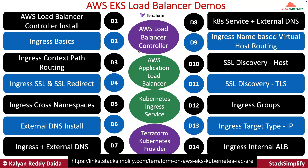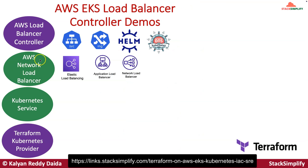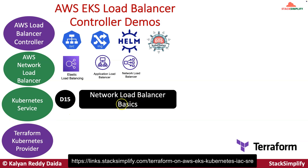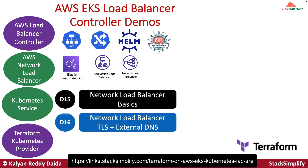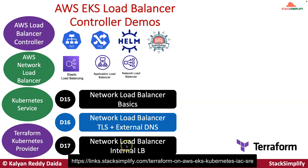For AWS network load balancer with Kubernetes service objects, we will implement network load balancer basics, network load balancer TLS plus external DNS with TLS annotations and external DNS annotations, and finally network load balancer internal LB — all using the Terraform Kubernetes provider in Terraform language only.